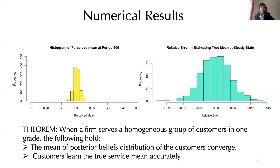Thus, when a firm serves a homogeneous group of customers in one grade, the mean beliefs about the posterior distributions of customers converge, and customers learn the true service mean accurately. After interacting with the system multiple times, customers have full information about the service quality they can expect to receive.